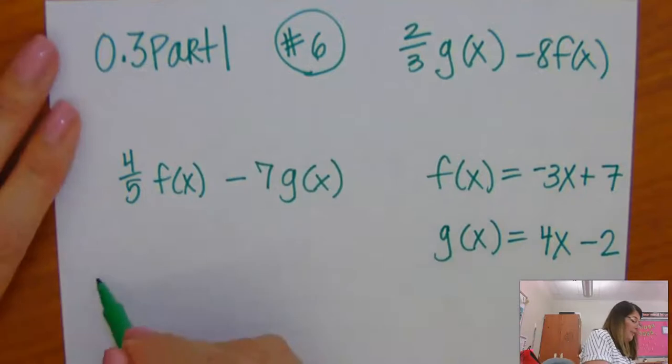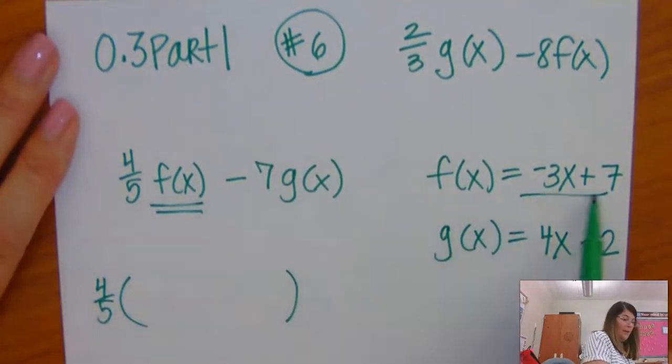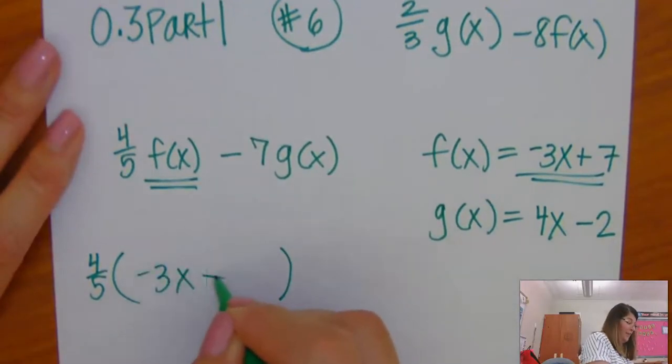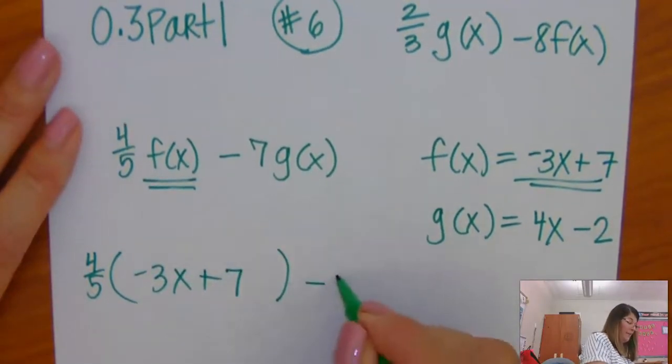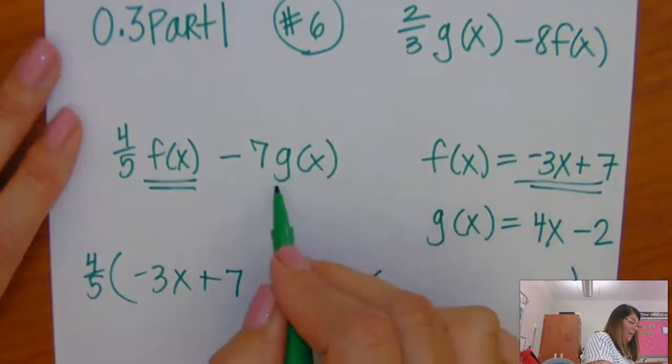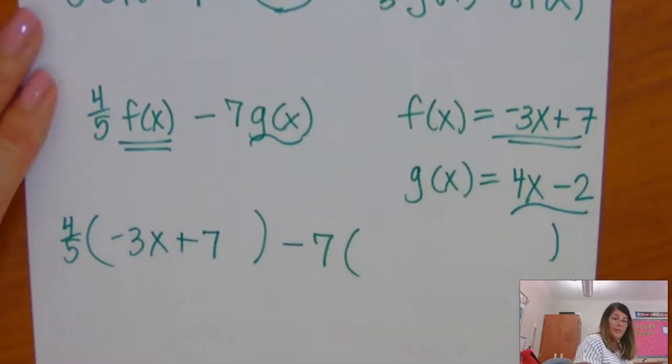Okay, so I'm going to set this up. Everywhere I see f(x), I'm going to replace it with the f(x) stuff: -3x + 7. Minus 7. Everywhere I see g(x), I'm going to replace it with the g(x) stuff.